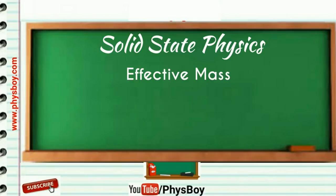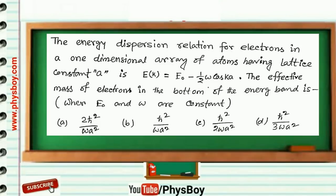The question was: the energy dispersion relation for electrons in one dimensional array of atoms having lattice constant a is E(K) = E₀ - ½ω cos(Ka). The effective mass of electron in the bottom of the energy band is, where E₀ and ω are constant.